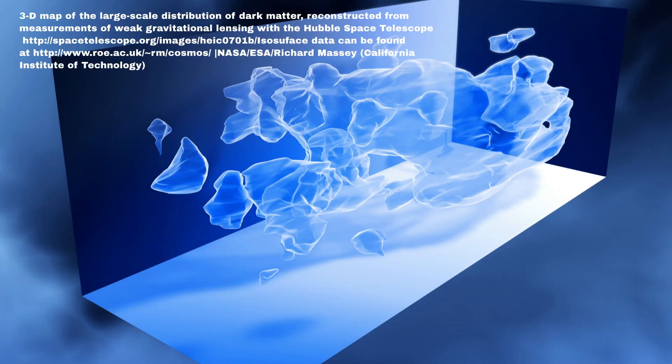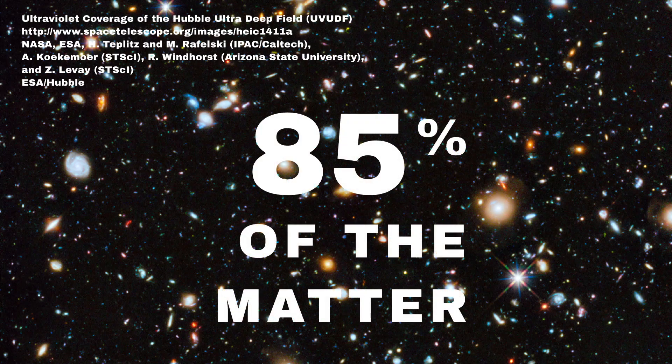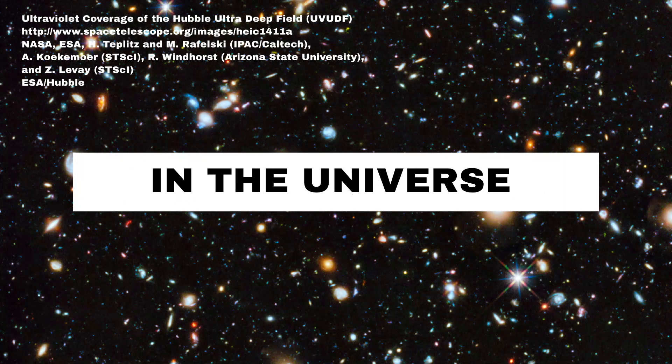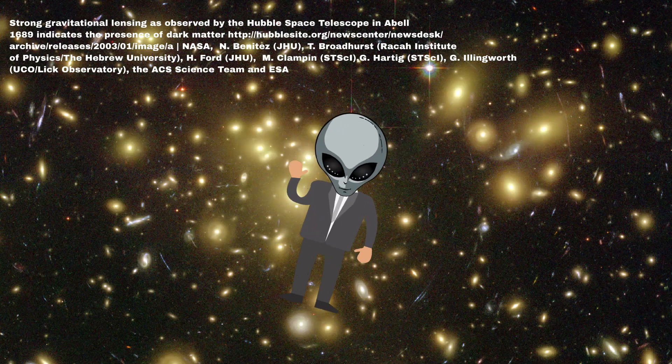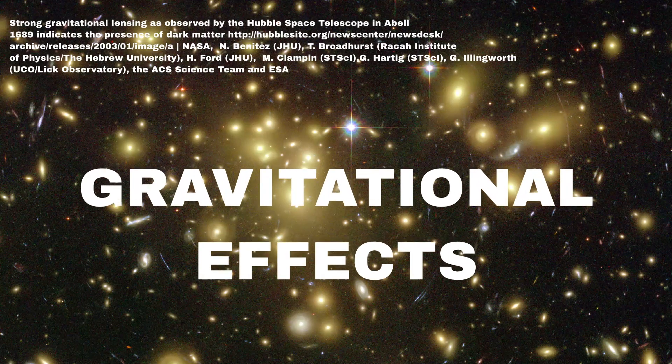Dark matter is a mysterious substance that makes up about 85% of the matter in the universe. We cannot see it, but we know it's there because of its gravitational effects on visible matter.